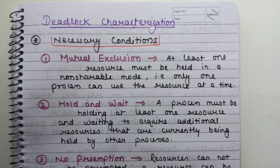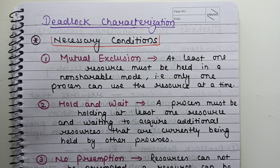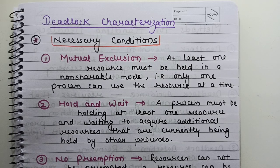Hello learners, welcome back to my channel. In this video we are going to discuss deadlock characterization. In the last video we discussed the introduction to deadlock, and now let us understand how we characterize it — what are the different features that characterize the deadlock. In a deadlock, processes never finish their execution and all the system resources are tied up, preventing other jobs from starting.